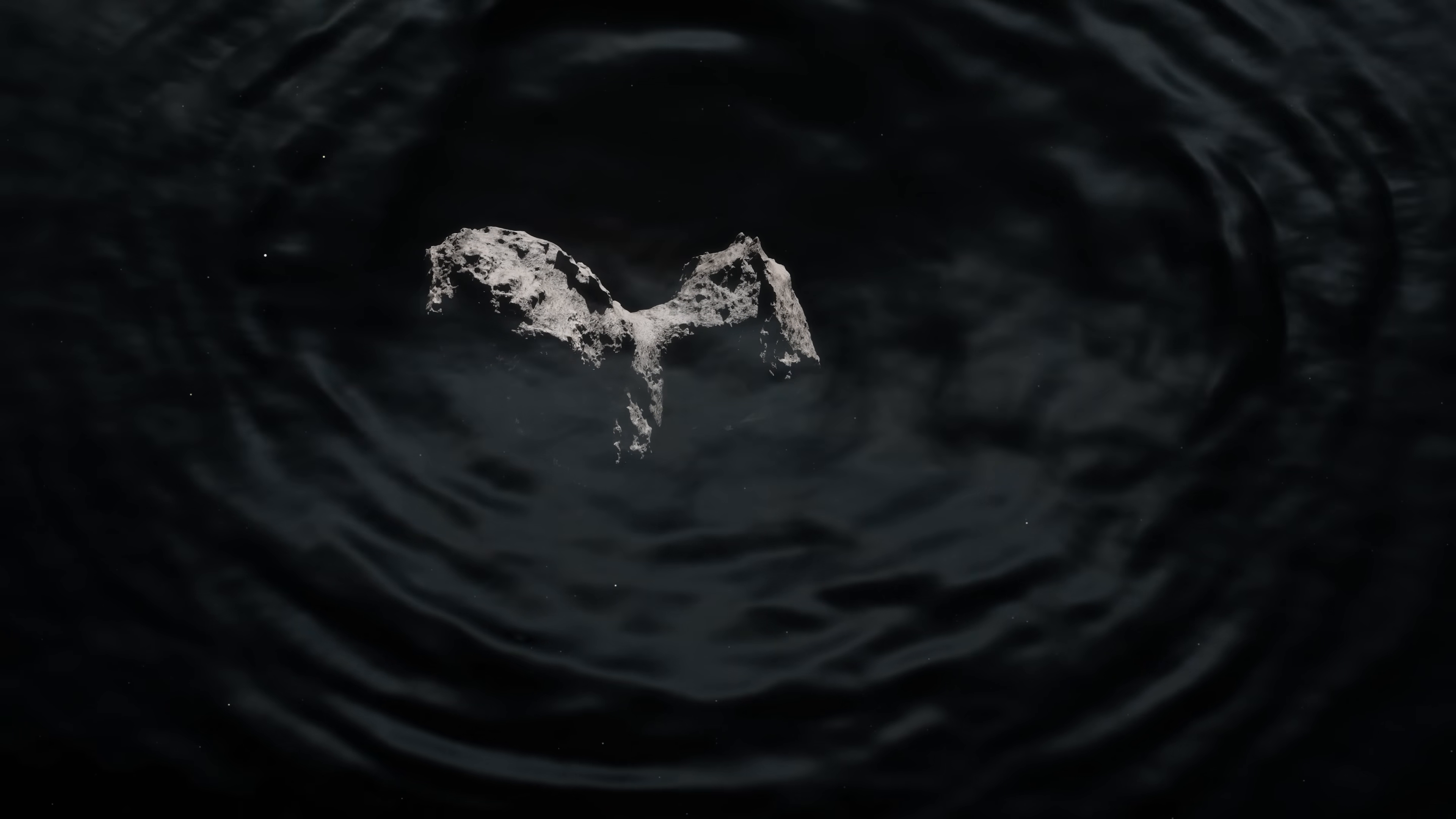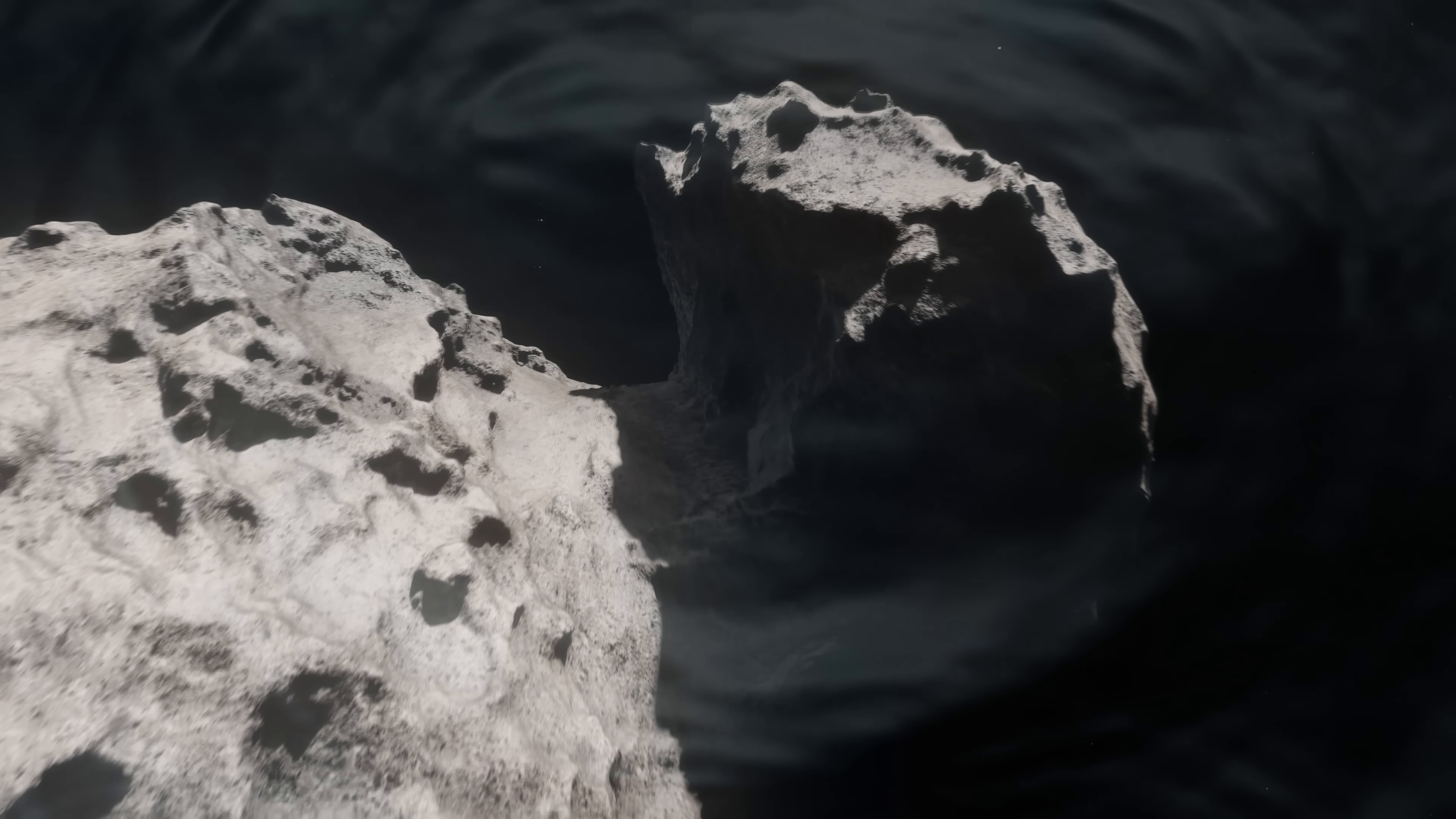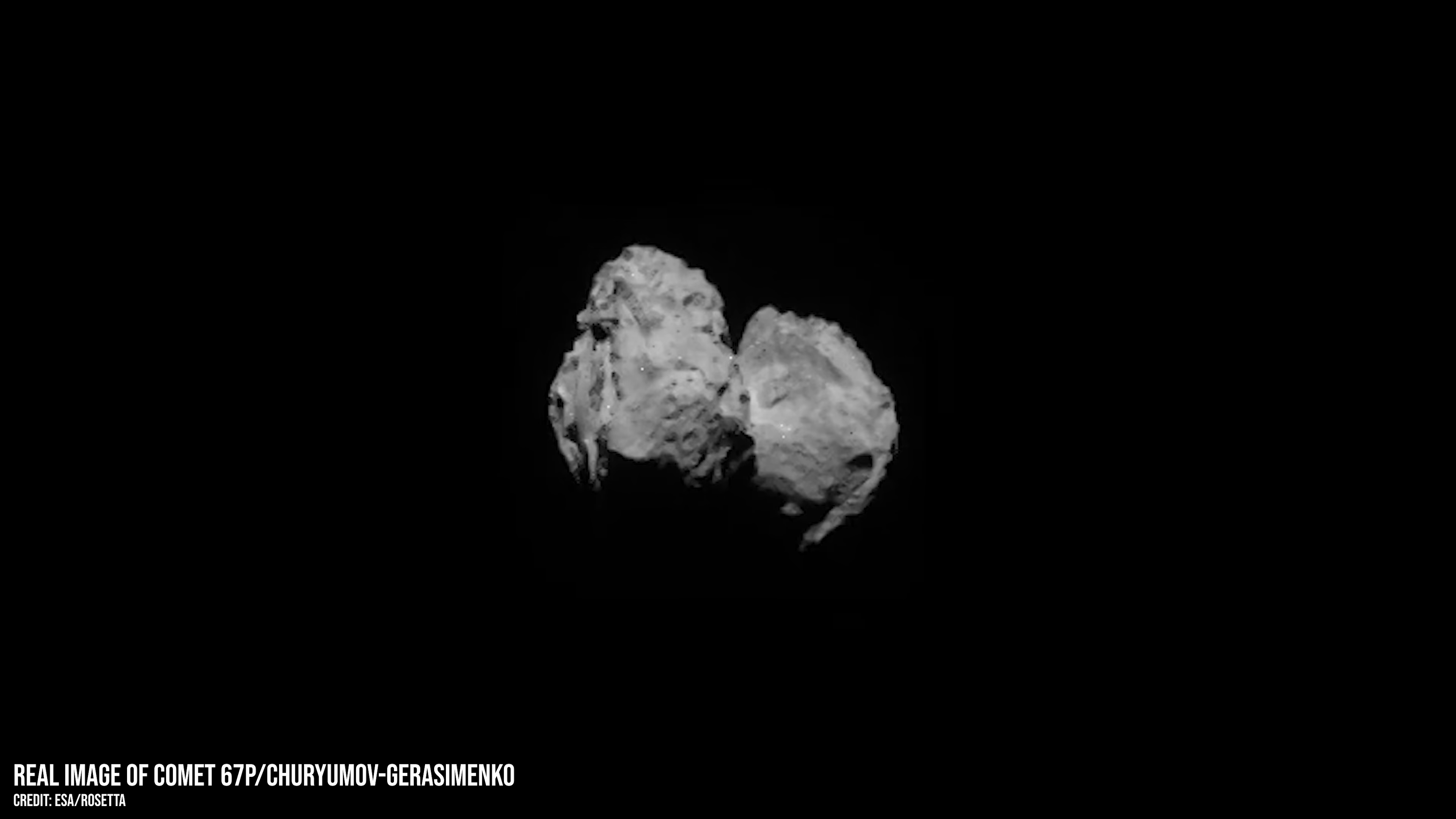The comet's song would not be audible to the human ear because it is being emitted at 40 to 50 millihertz, far below the range of human hearing, which typically picks up between 20 hertz and 20 kilohertz. To make the sound audible to humans, Rosetta scientists have increased the frequencies by 10,000 times, allowing us to experience this strange comet song.